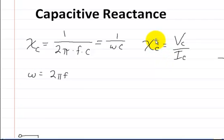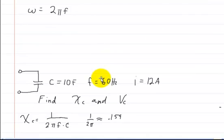Another way to solve for the capacitive reactance is to find the voltage on the capacitor and divide that by the current on the capacitor. So let's jump into a problem real quick.